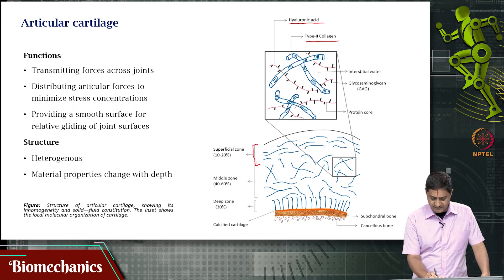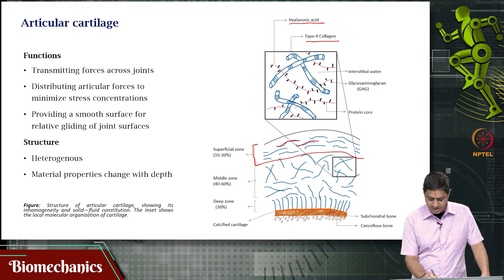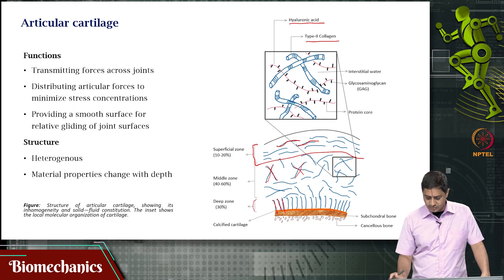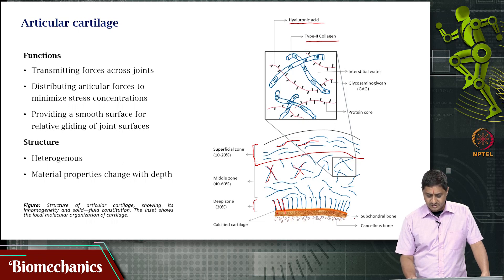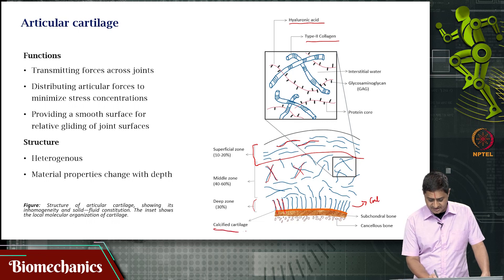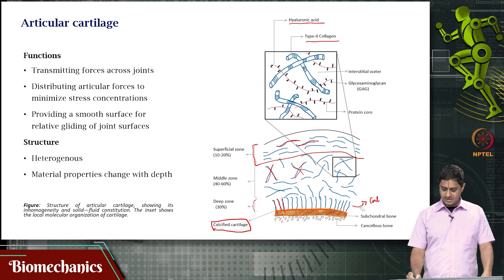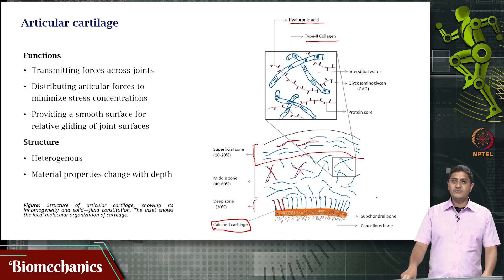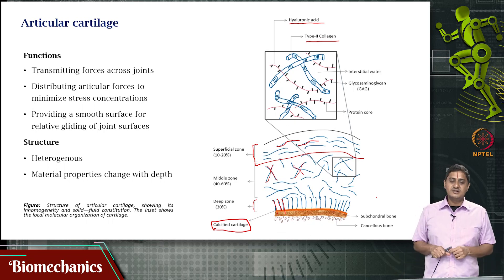For example, in the superficial zone you have cartilage structured in one way. Then you have the middle zone, which is quite heterogeneous. Then you have the deep zone where it is attached to the cancellous bone. Below that is the calcified cartilage. So when you say cartilage, this whole structure is called cartilage, but the properties of the material change with depth.